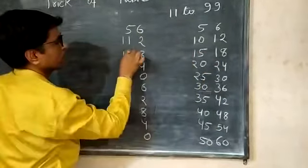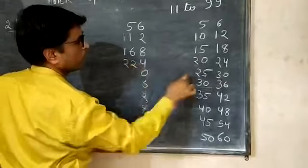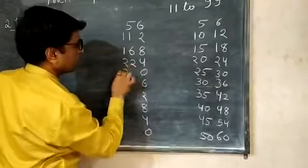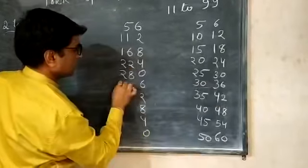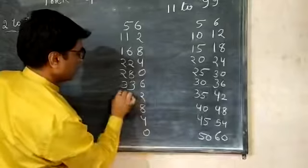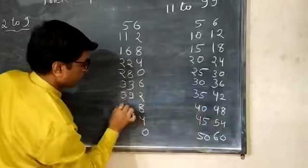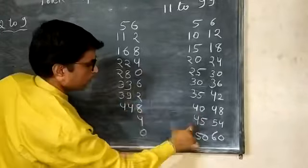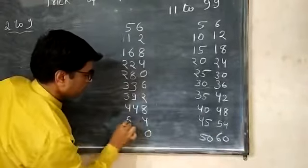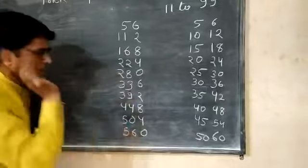11, 15 plus 1 is 16, 20 plus 2 is 22, 25 plus 3 is 28, 30 plus 3 is 33. Similar way, 35 plus 4 is 39, 40 plus 4 is 44. Similar way, 45 plus 5 is 50.